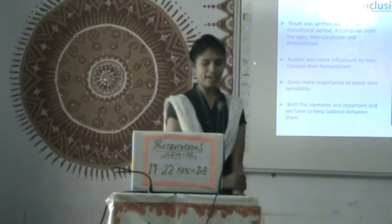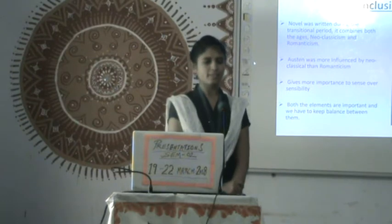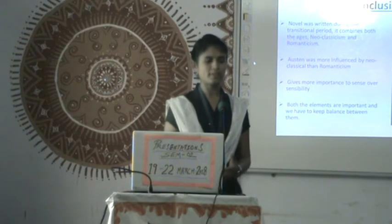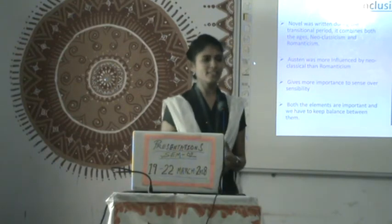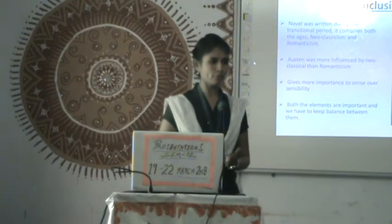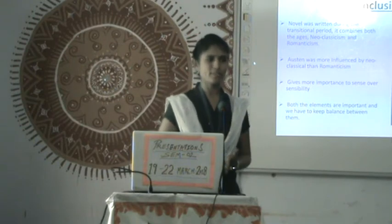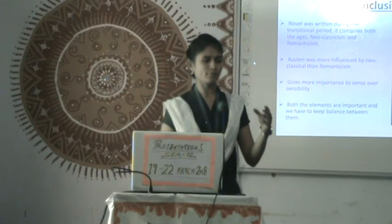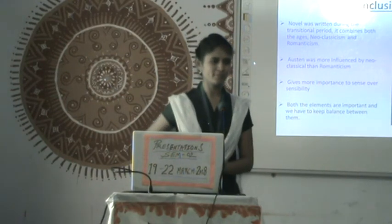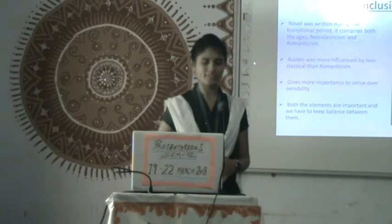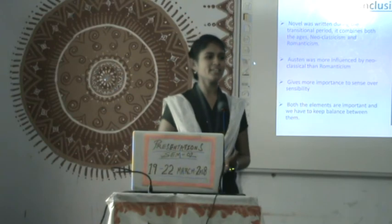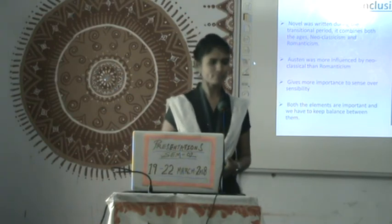In conclusion, by combining the qualities of neoclassicism and romanticism, Jane Austen writes her novel, though we can see she is more influenced by neoclassicism. She portrays Eleanor in a superior position and Marian in an inferior one, and in this way she gives more importance to sense over sensibility. Thank you.